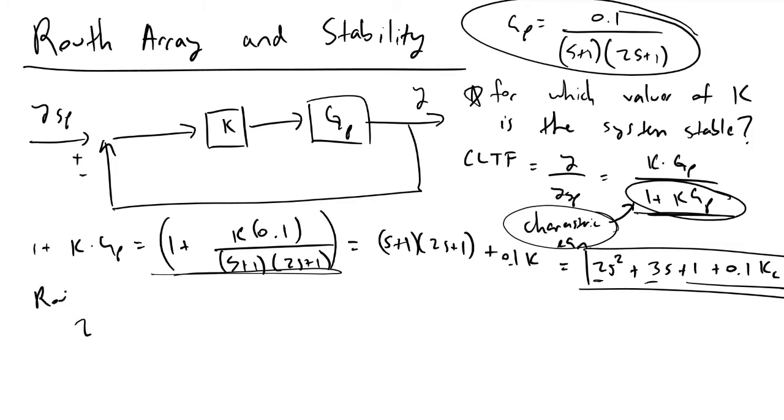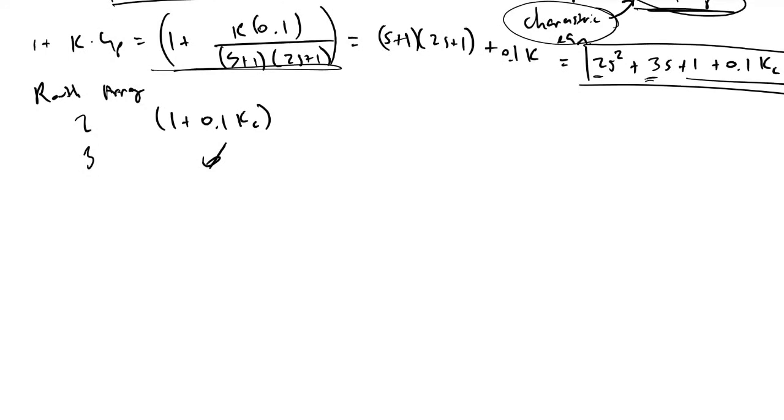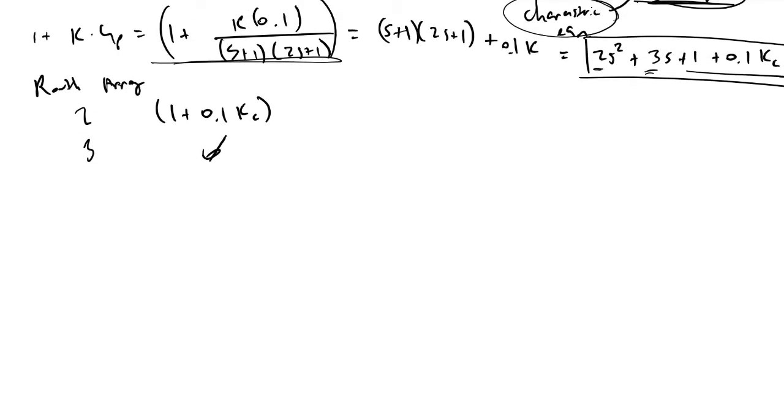So here what we have is the number 2. I'll just write this out. We have our Routh array. We have the number 2, and then we have another quantity, 1 plus 0.1 times KC. Now if we move to the second row of our Routh array, it is defined to be the second, fourth, sixth, and so on—every even element coefficient of our numerator in our characteristic equation. In this case, it would just be the number 3, and we can pretend there was another term, but here it's just really 0. So we've built our first two rows of our Routh array.